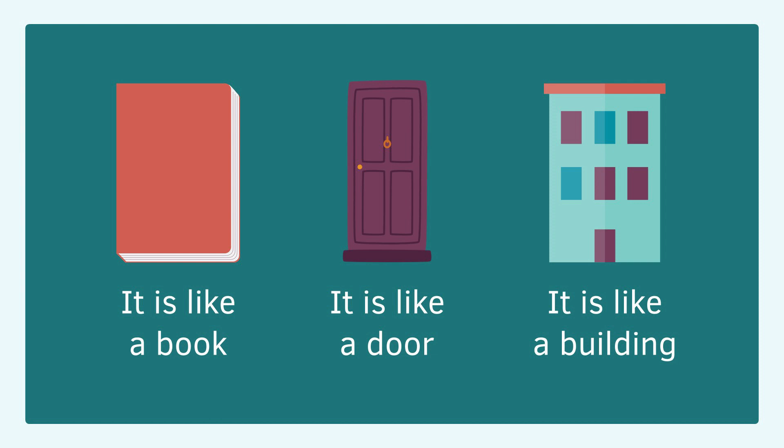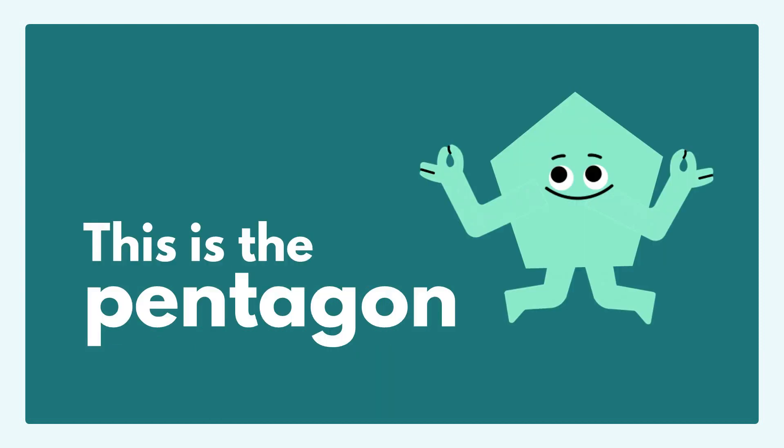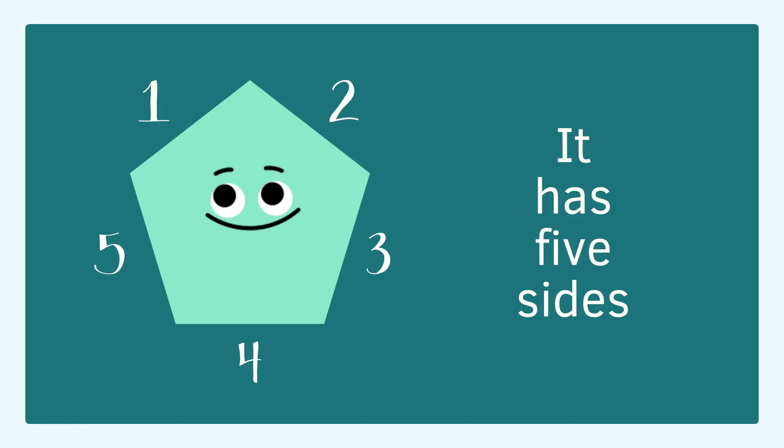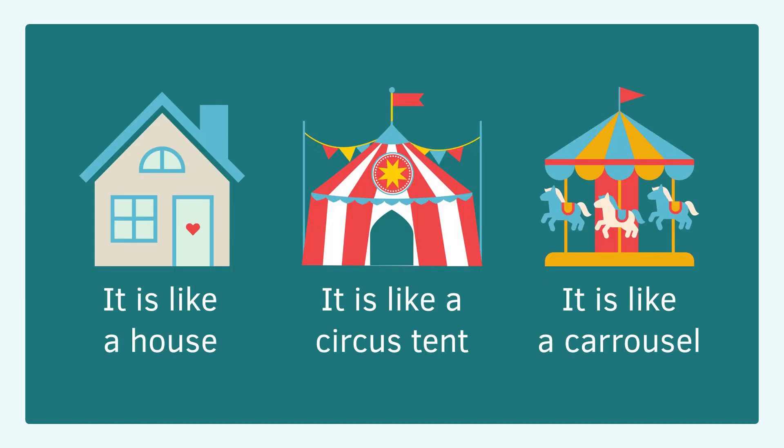This is the pentagon. It has five sides. Example of pentagon: a house, circus tent, a carousel.